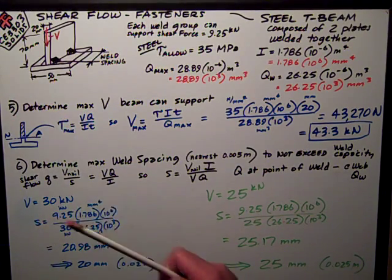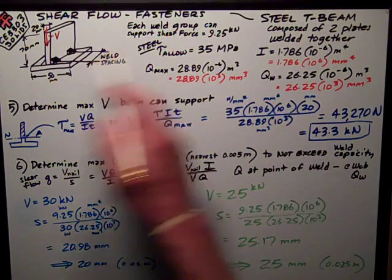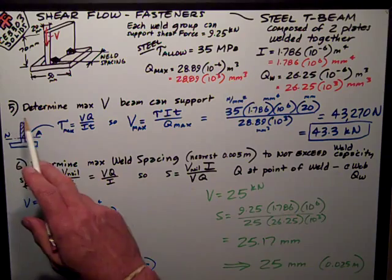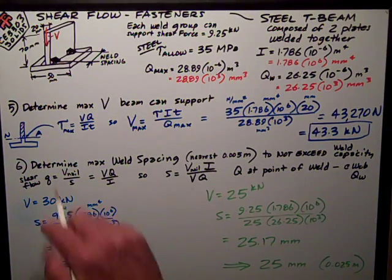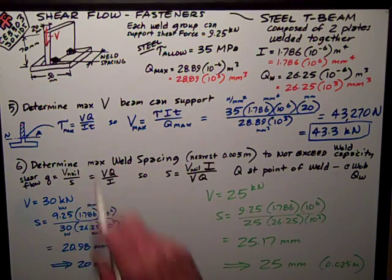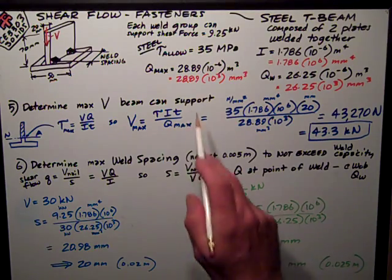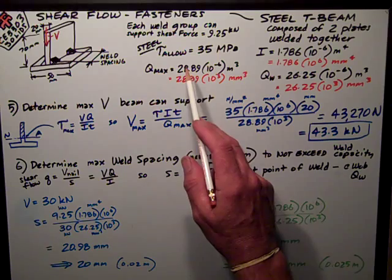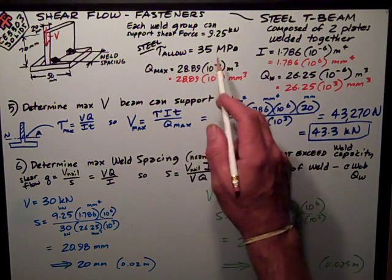First part was to determine—all this was constant for both versions of the test, the blue and the green. This was the same for both tests. We wanted to determine the maximum shear the beam can support. That's going to be based on the allowable shear stress in the steel, 35 megapascals.